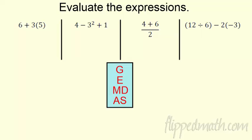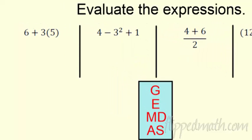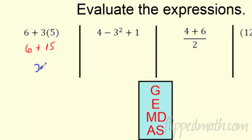Let's start evaluating expressions — that means breaking them all the way down to a single number. Following GIMDAS, I'm going to start with the multiplication: 3 times 5 is 15. Then 6 plus 15 is 21, and I'm done. Make sure you multiply before you add.